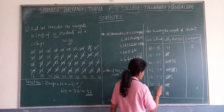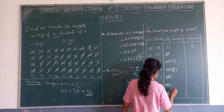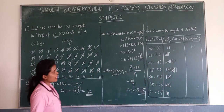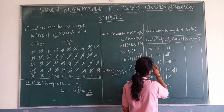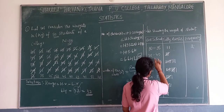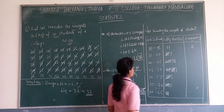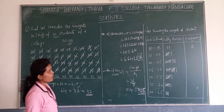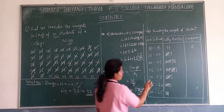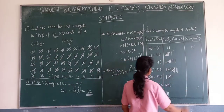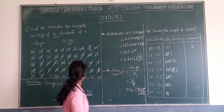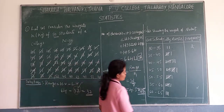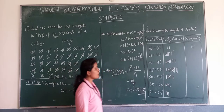56, then 38 — where 38 will come. 38, 38, 45 — 45 will come here. 45, 52 — where 52 will come, here 52.